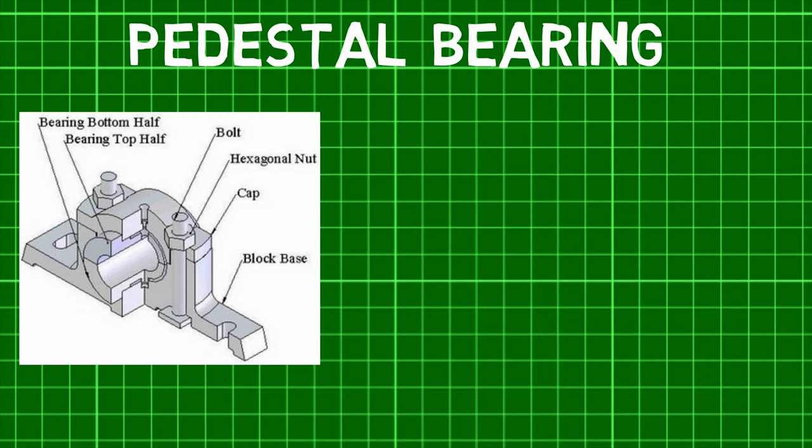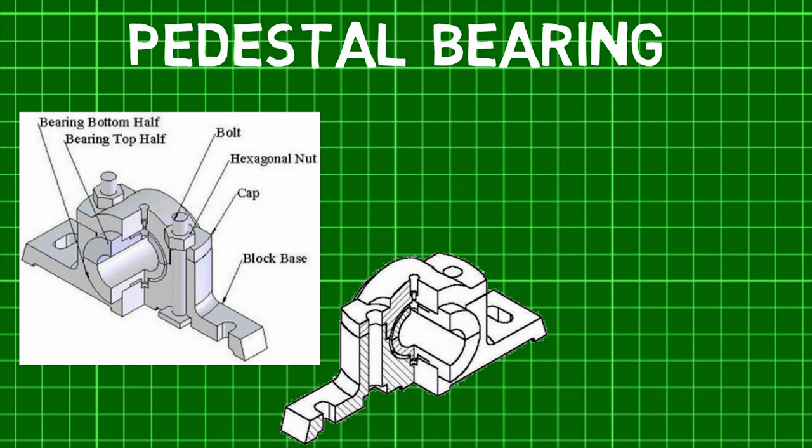A pedestal bearing is also called a plumber block. It consists of three main parts: a pedestal, bushes or steps made in two halves, and finally a cap. The cap, by means of two square headed bolts, holds the halves of the steps together.